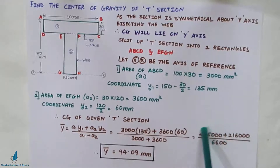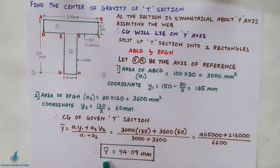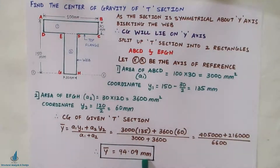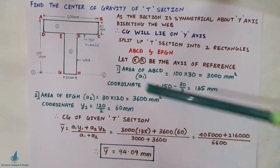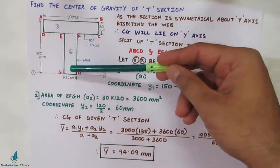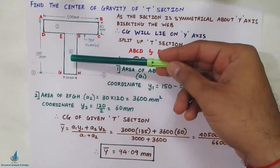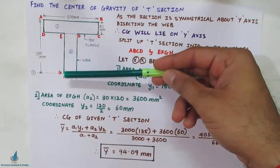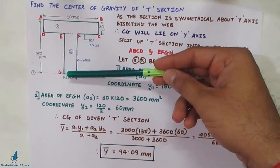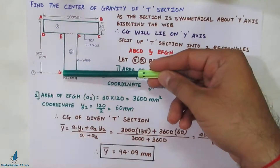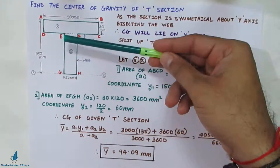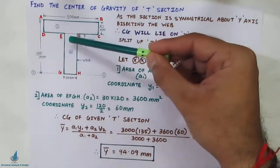Dividing out the entire expression gives us the center of gravity ȳ = 94.09 mm along the Y-axis from the bottom-most part. The centroid of this T-section lies 94.09 mm from the bottom-most reference axis.